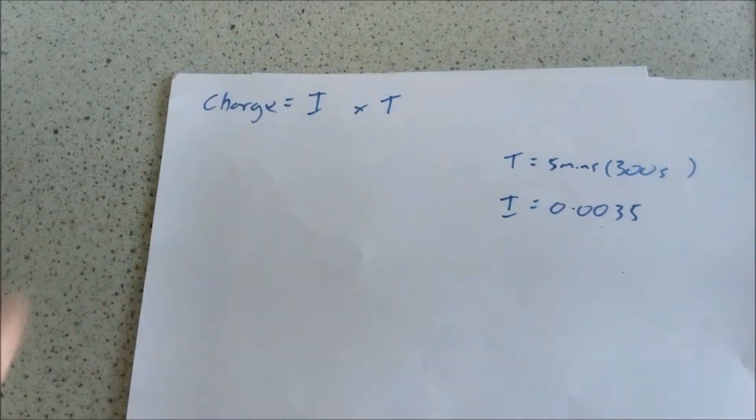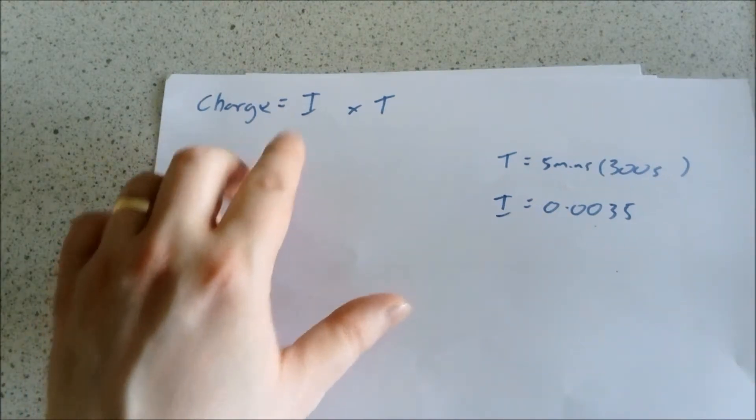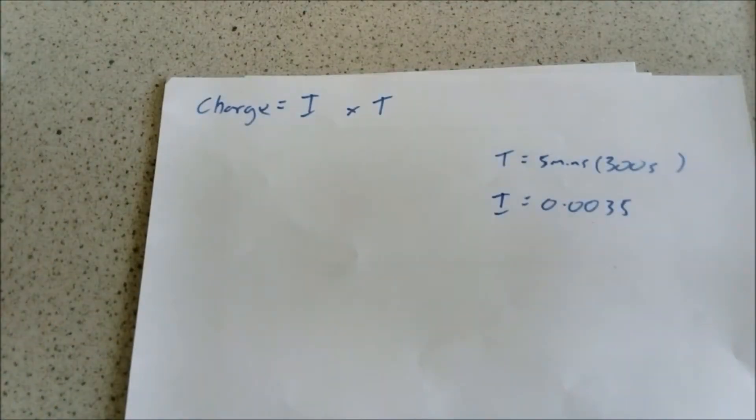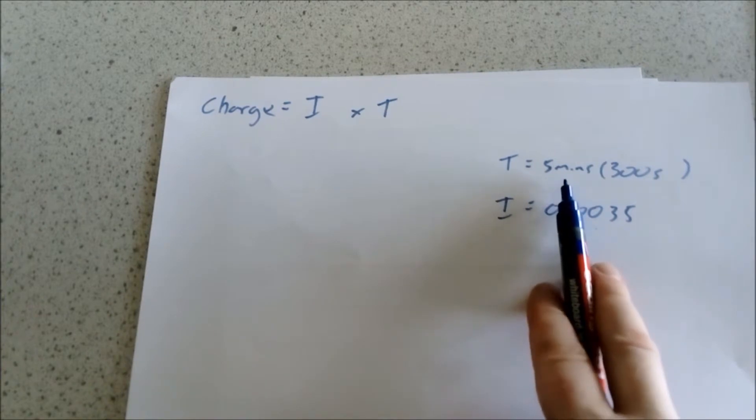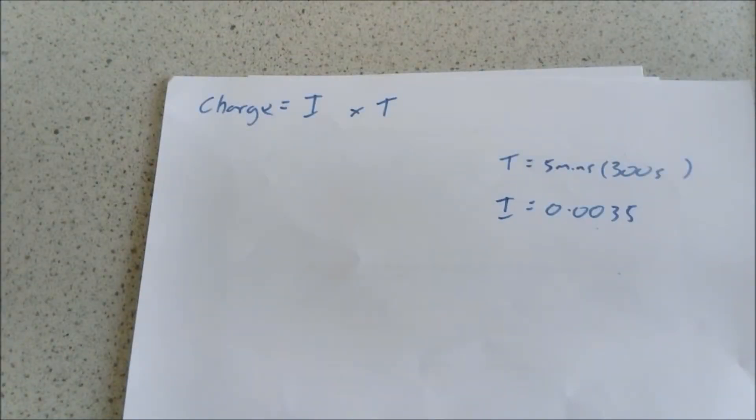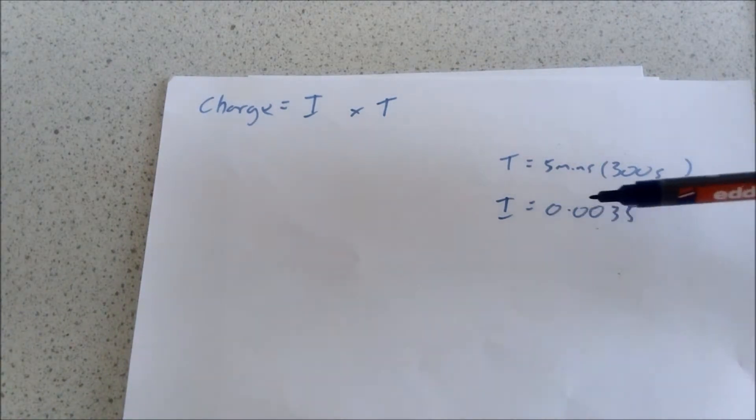So if you remember your equation for charge: charge is equal to current times time. We know that the time is five minutes - remember that you've got to convert minutes into seconds. So your time is going to be 300 seconds. We know that the current is 0.0035 amps.